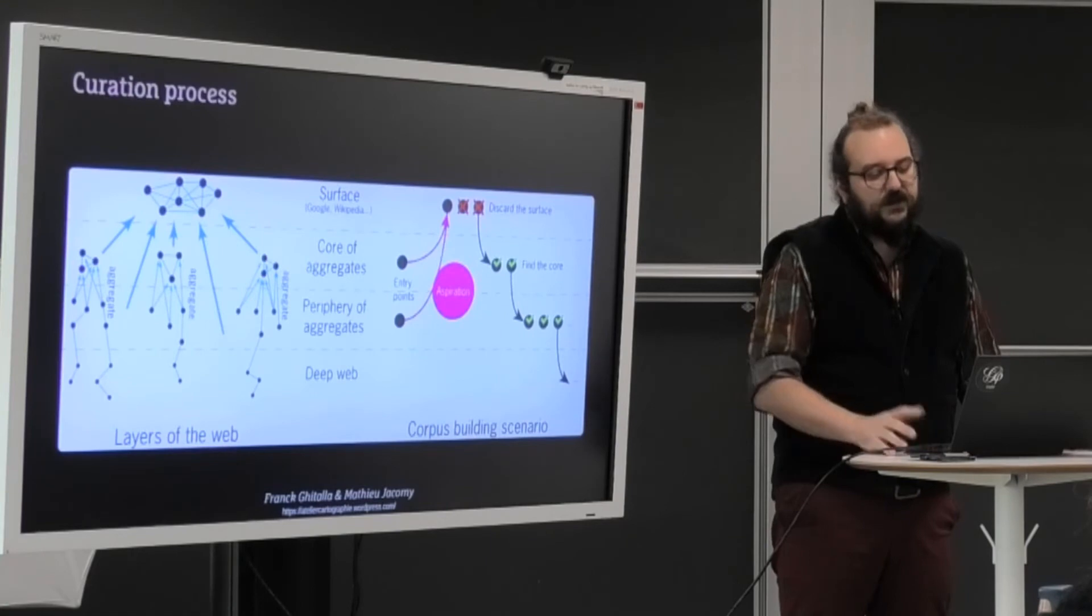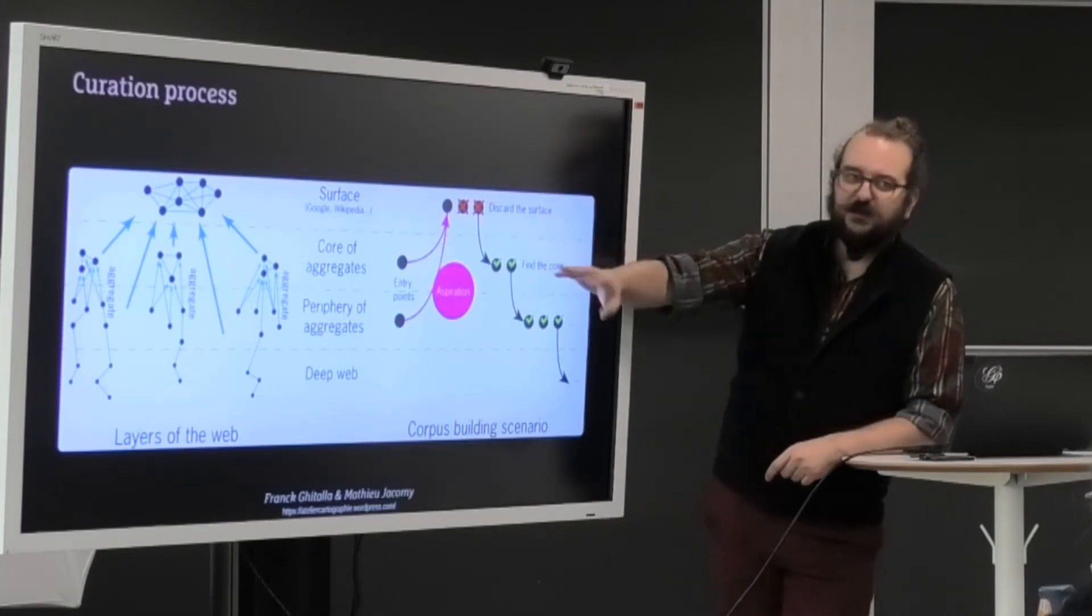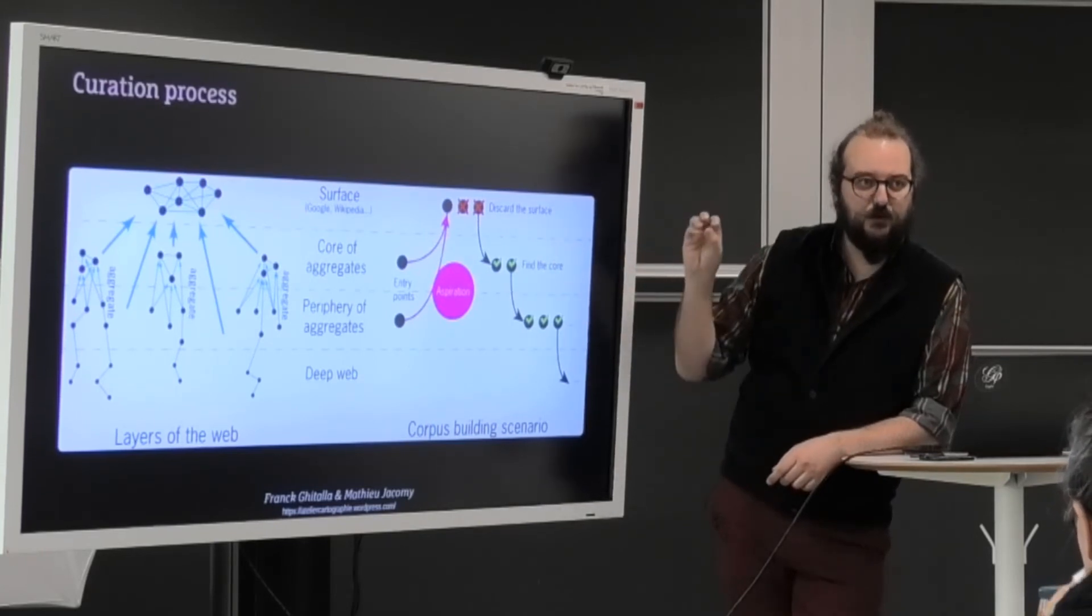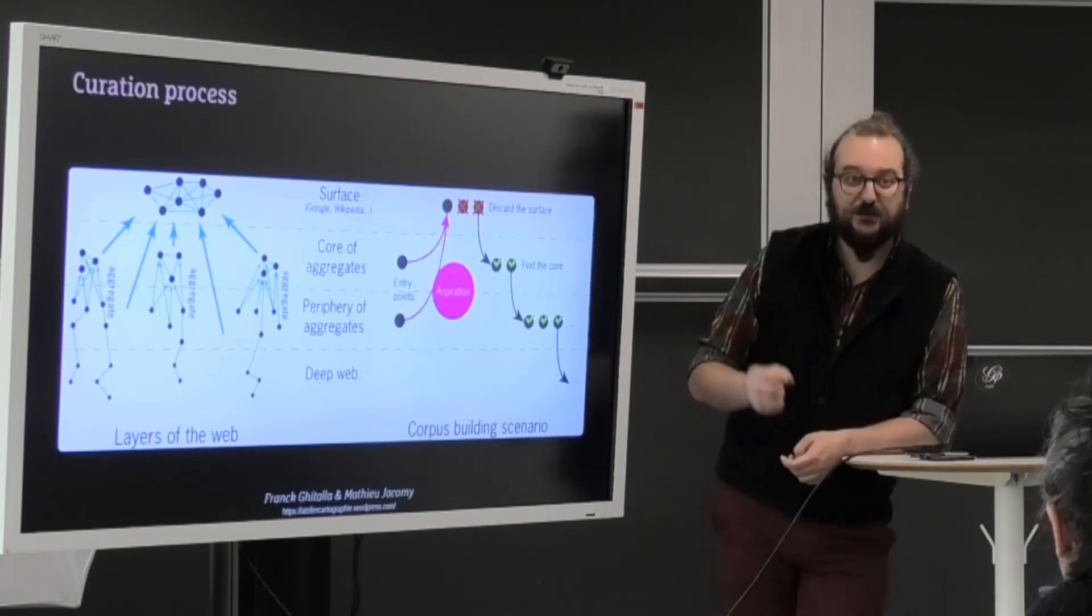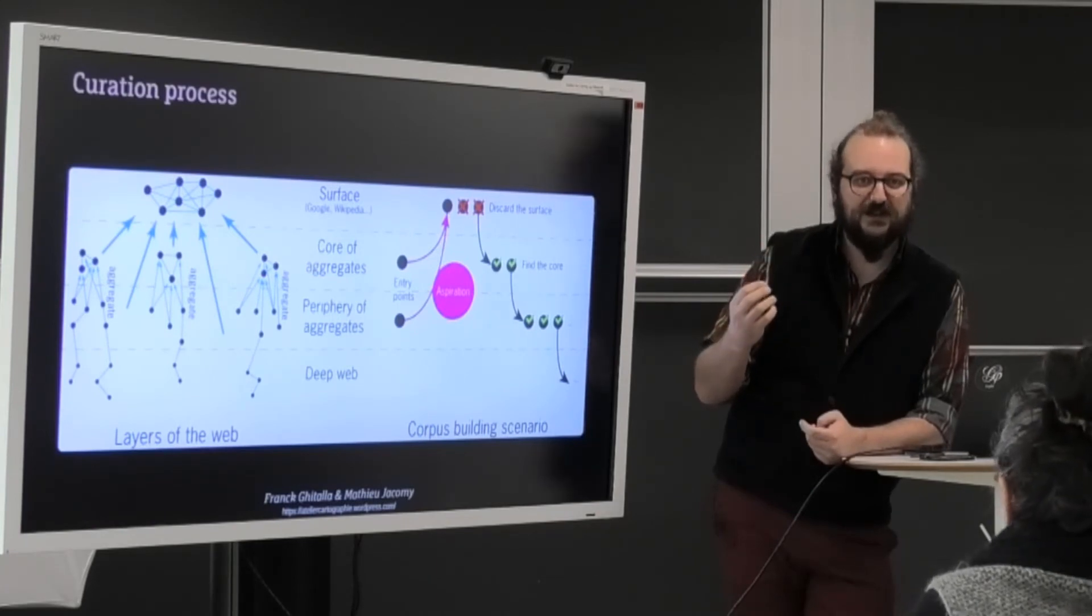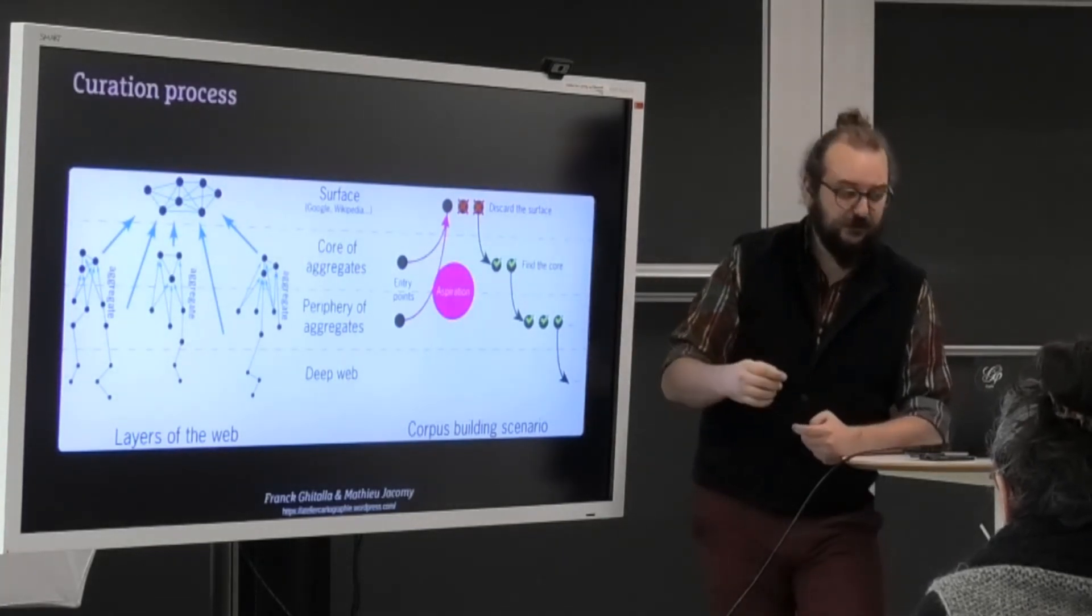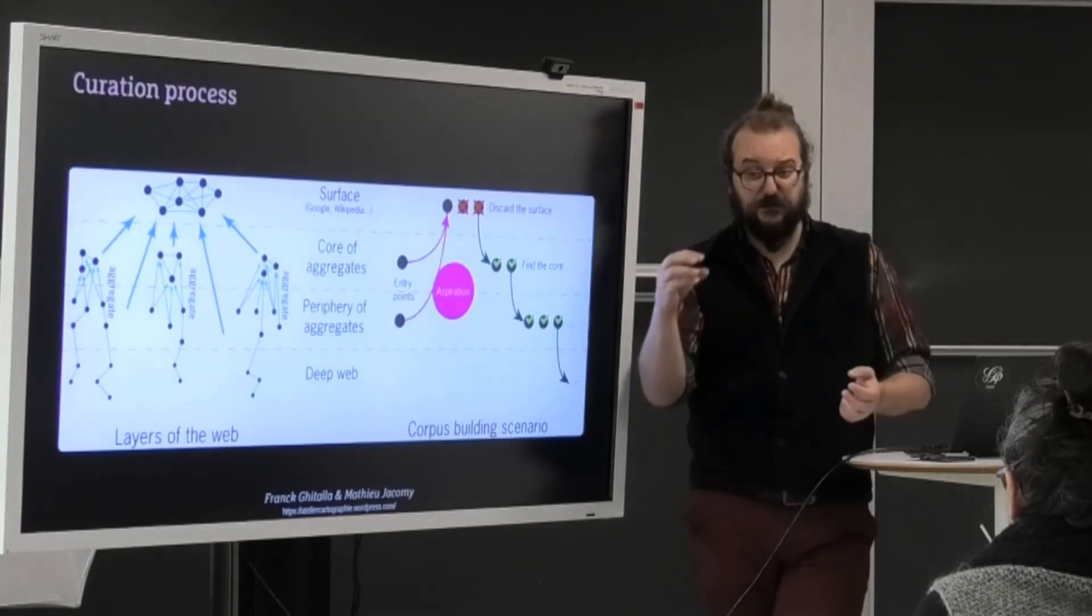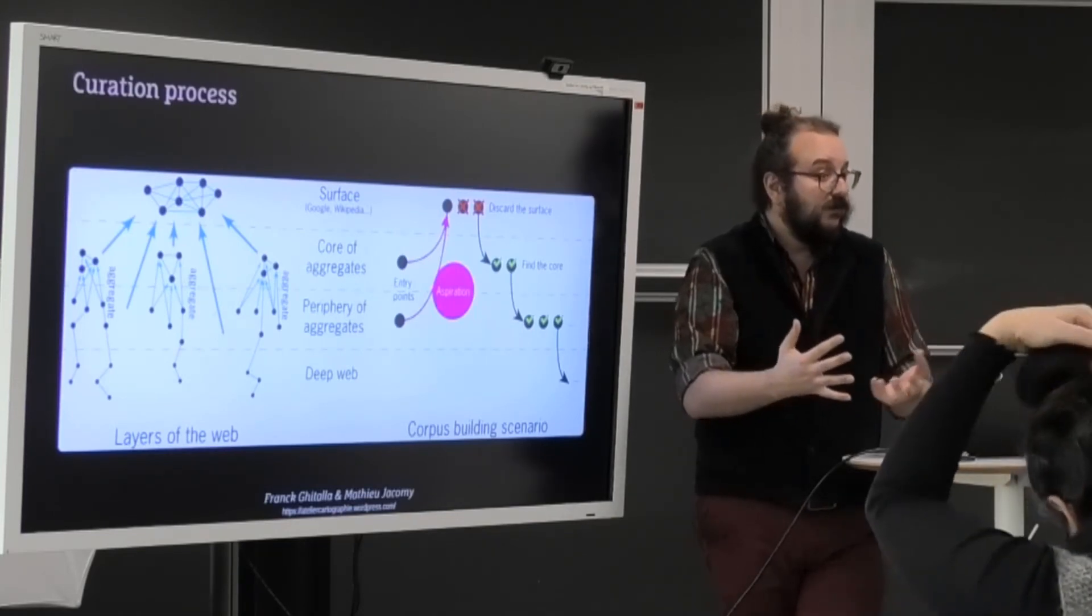So the only thing that is important to anticipate here is that this structure that comes from graph theory, and we could dig into that later, but I'm just going to stick to this vision for now, has a super strong impact on what happens when you start your corpus. And it has a good side and a bad side. The good side is that you don't need to start with the good web entities. If you miss the center of your target, you will be aspired to it, because the center of your target, the core of your aggregate, is the most cited part of your aggregate by definition. So if you miss that, you will find it super quickly. So you cannot really miss the most important resources of your aggregate, of your community, of your domain.